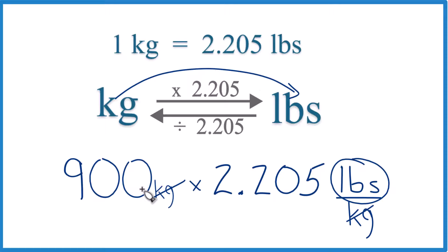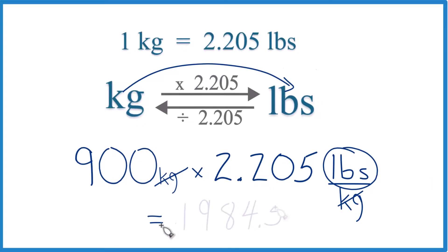So we take 900 times 2.205 pounds. We end up with 1,984.5, and we were going to pounds. That's all that we have left with our units, so that's it.